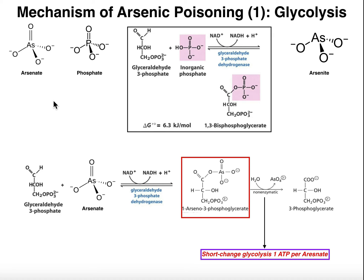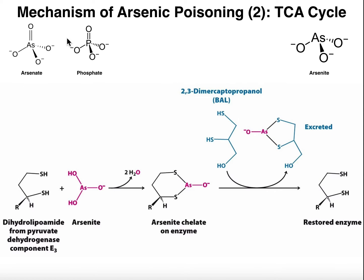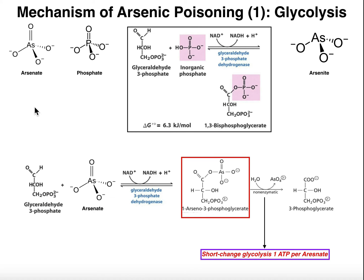There are actually a lot of different mechanisms, but we're going to look at two. The first one is a very minor one — how arsenic disrupts glycolysis — but there's a major mechanism of arsenic poisoning, and that's the disruption of the TCA cycle. First, let's look at the forms of arsenic. The two most common forms are arsenate and arsenite. Arsenate, if you look at its chemical structure, other than the central atom of arsenic, it's going to resemble the molecule of phosphate very closely — we still have four oxygens and a net charge of minus three on the molecule.